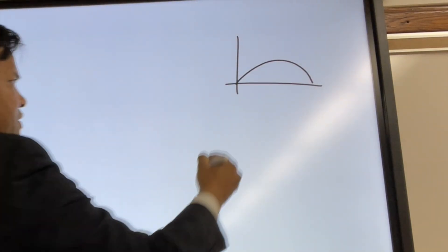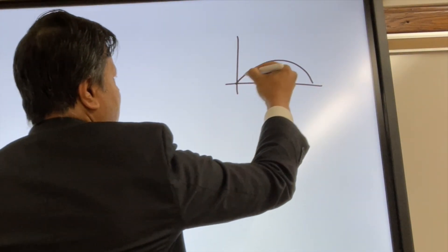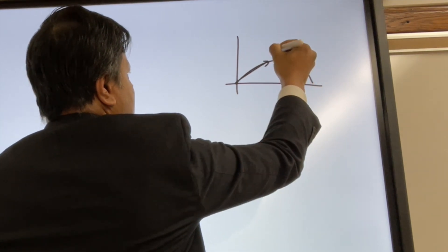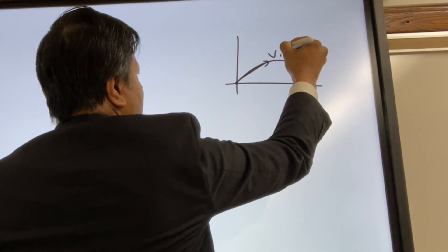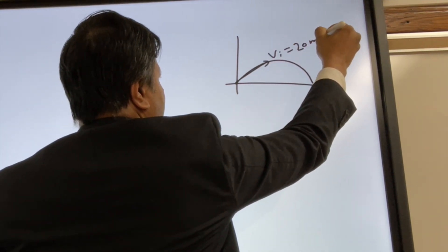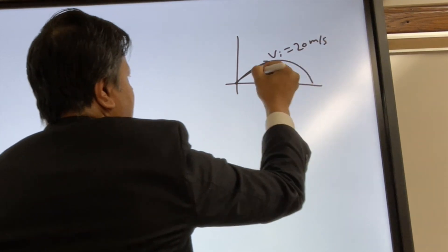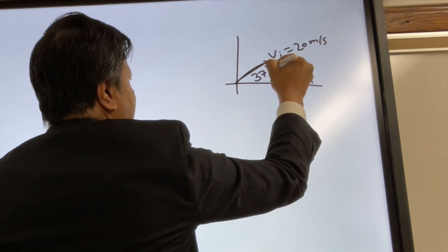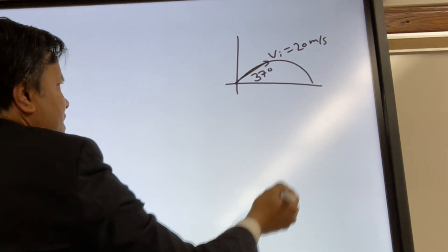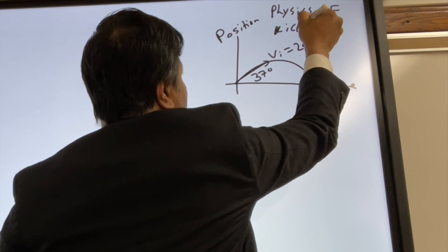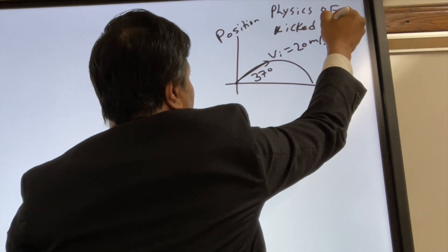This is the trajectory of a kickball. Velocity initial is 20 meters per second at a 37 degree angle. This is our time — kicked ball.